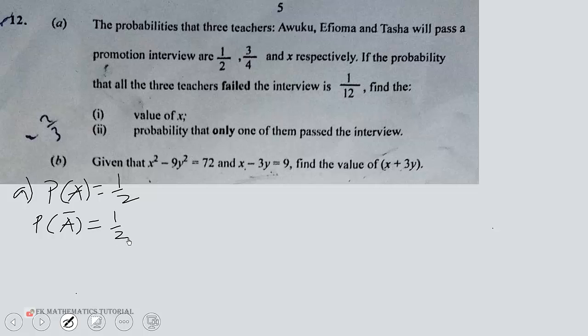The probability that Ifyoma passes is 3 over 4. The probability that Ifyoma will not pass is 1 minus 3 over 4, which is 1 over 4.